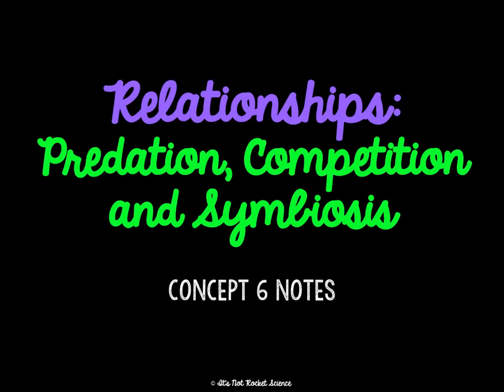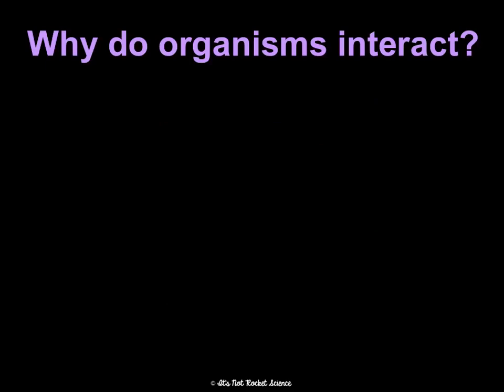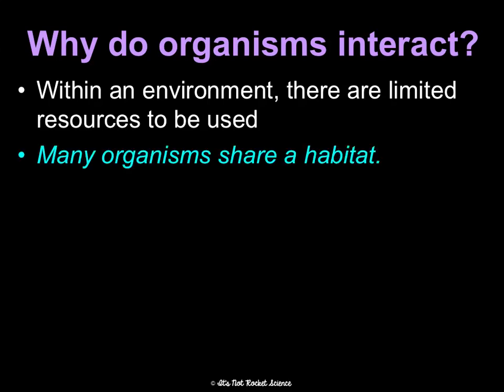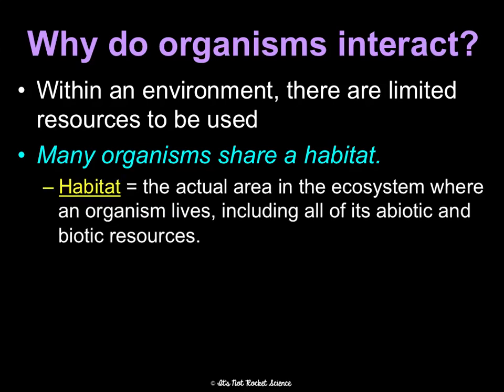Most people assume that all biology is about plants and animals, and of course there are subsets of biology that are, but for us, this is pretty much all we talk about — plants and animals, mainly. So why do organisms interact at all? Within an environment, there are limited resources. So many organisms end up sharing a habitat, and a habitat is the actual area in the ecosystem where they live, including all the living and non-living parts of their space — the abiotic and biotic resources.